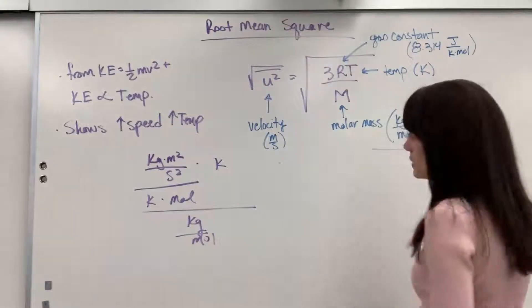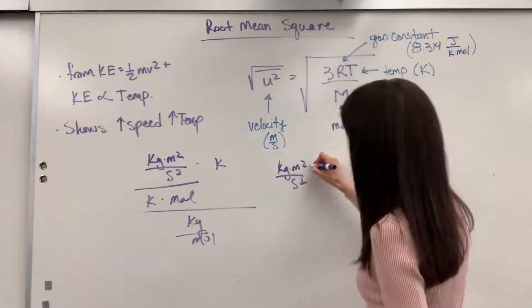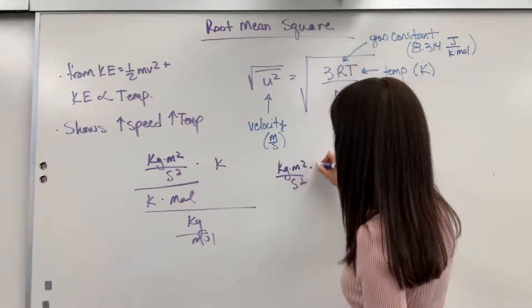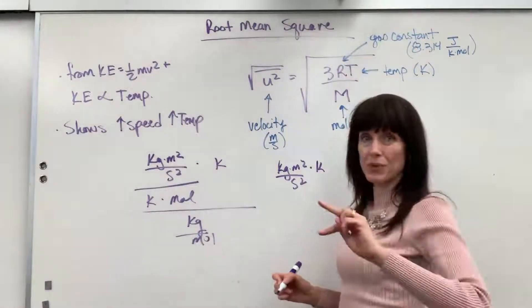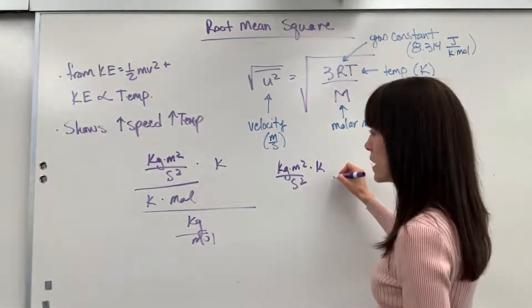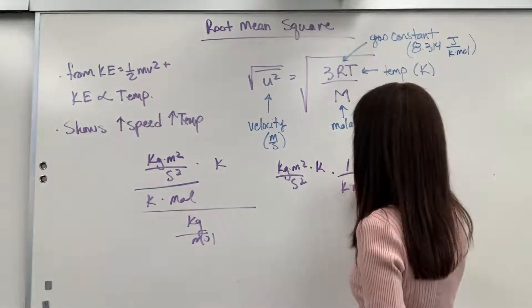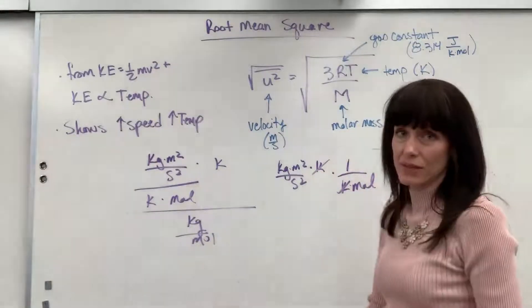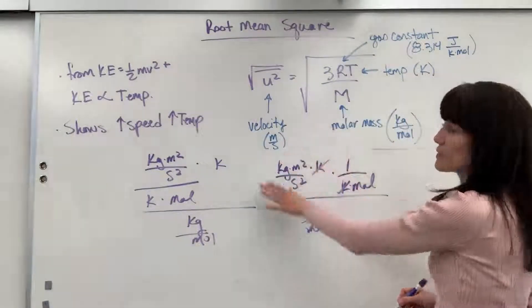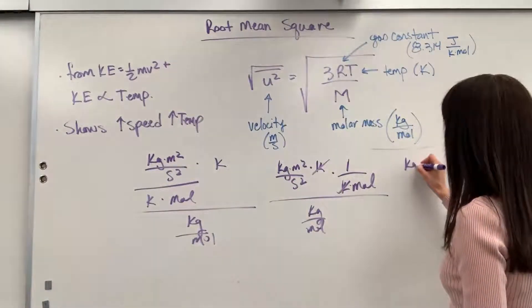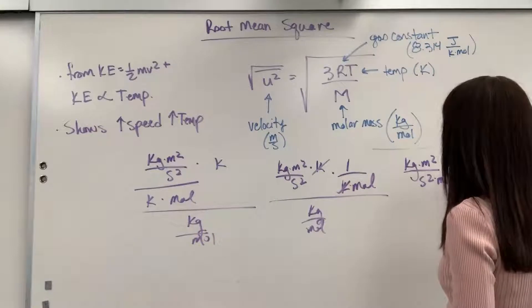We are going to get kilogram times meter squared divided by second squared. So this is going to be, I'm multiplying, so it's going to be times Kelvin. Now, when you have a fraction divided by a fraction, you take the fraction on the bottom, reciprocate it, and multiply. So it's going to be times, so this is divided by Kelvin times mol, so this is going to be times one over Kelvin times mol, so notice Kelvin cancels. And this is still all over kilogram per mol.